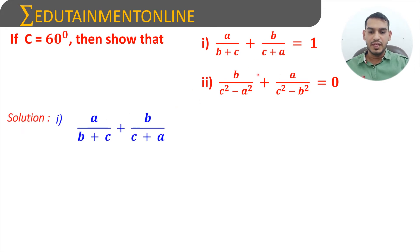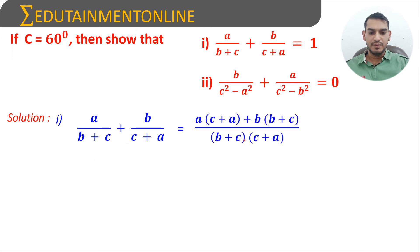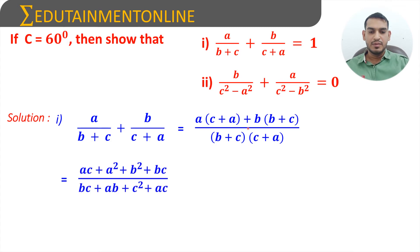For the first part, a/(b+c) + b/(c+a) — cross multiplying gives: [a(c+a) + b(b+c)] / [(b+c)(c+a)]. Expanding the numerator: ac + a² + b² + bc. Expanding the denominator: bc + ab + c² + ac.